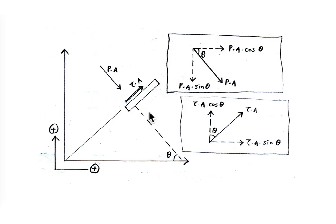So for F equals PA here, we could say that we could distribute it into X and Y components, which is PA cos theta for X component and PA sin theta for the Y component. The same thing goes to tau times A. The X component is tau A sin theta and the Y component is tau A cos theta.